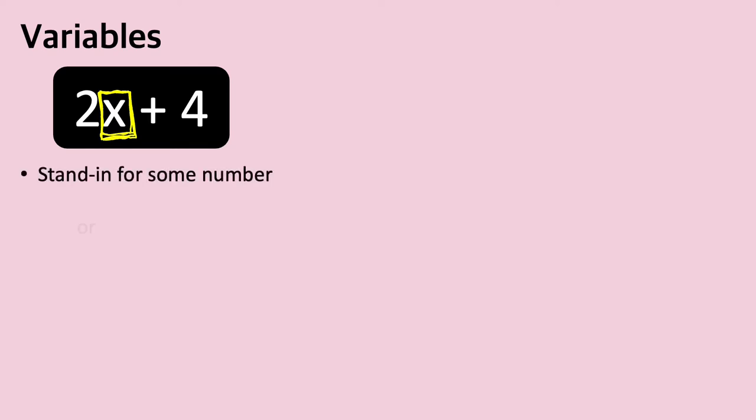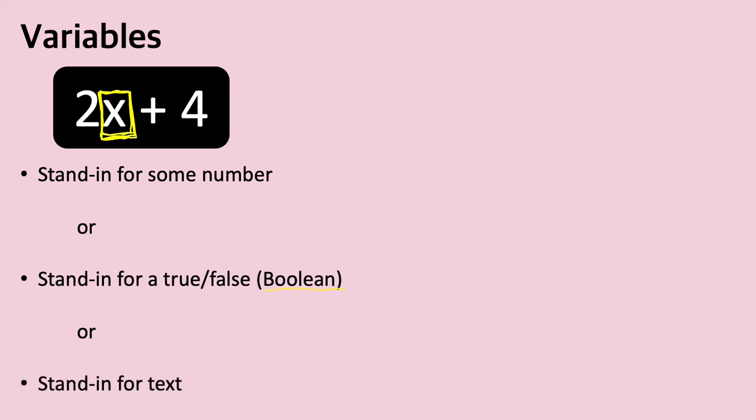The first thing we should address here are variables — you might remember these from algebra class. They're basically just placeholders that can be really anything you want them to be, and that's the way they work in Sphero coding too. They can stand in for a number, a true/false value called a Boolean, or they could stand in for text.